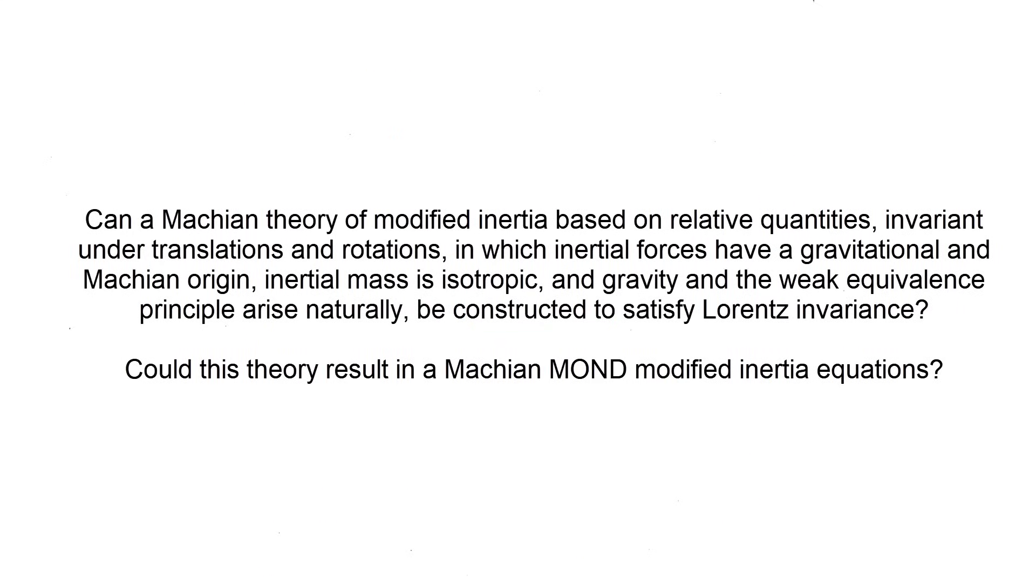Today, the question arises: can a Machian theory of modified inertia based on relative quantities invariant under translations and rotations, in which inertial forces have a gravitational and Machian origin, inertial mass is isotropic, and gravity and the weak equivalence principle arise naturally, be constructed to satisfy Lorentz invariance? Could this theory result in Machian and momentum-modified inertia equations?